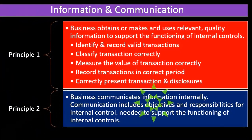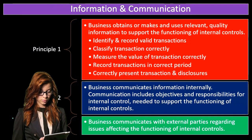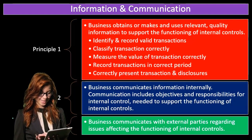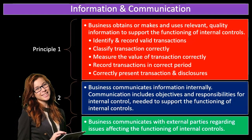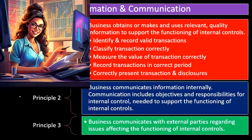Principle number two: the business communicates information internally, including objectives and responsibilities for internal controls needed to support their functioning. When we set up internal controls, we need good communication so people understand what is expected of them and the reasons behind the controls, giving them incentive to follow through. Principle number three: the business communicates with external parties regarding issues affecting the functioning of internal controls.